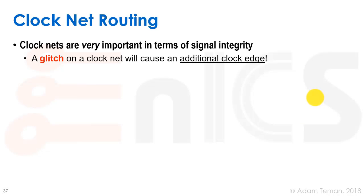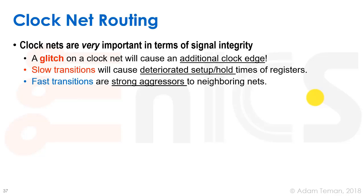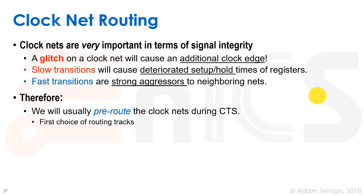So what about routing clock nets? Clock nets are very important in terms of signal integrity. A glitch on a clock net will cause an additional clock edge. Slow transitions will cause deteriorated setup and hold time in registers. Fast transitions are strong aggressors to neighboring nets. So clock nets are really important, and therefore we're going to usually pre-route the clock nets during CTS.